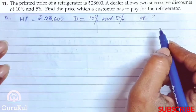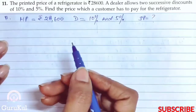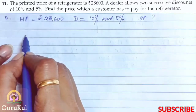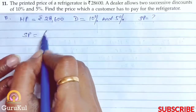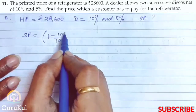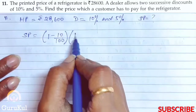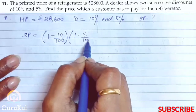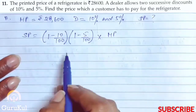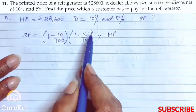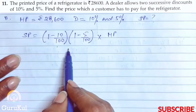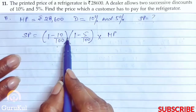We need to find the selling price. The formula is the same SP formula, but with a slight twist. SP is equal to (1 minus 10/100) into (1 minus 5/100) into marked price. Since two discounts were given, we mention both discounts this way, with no sign between them — that means it is multiplication.